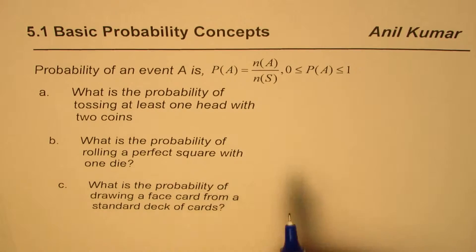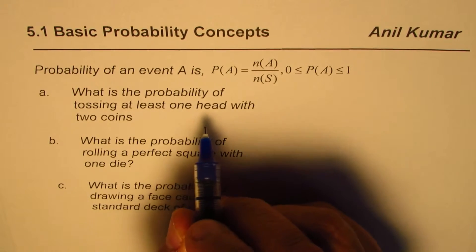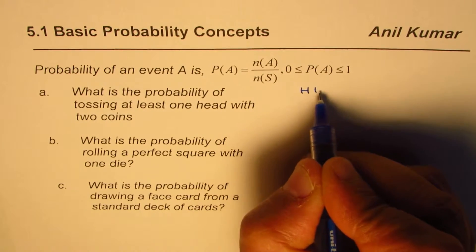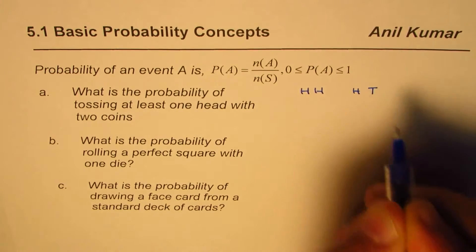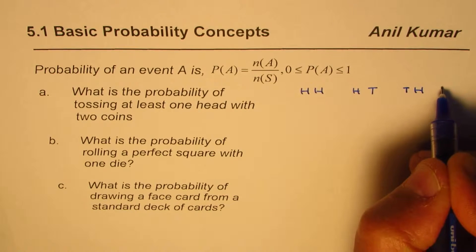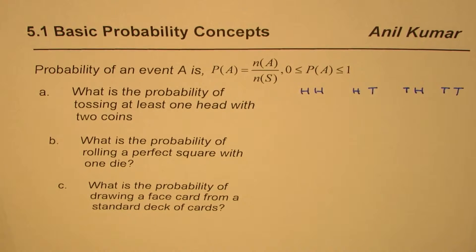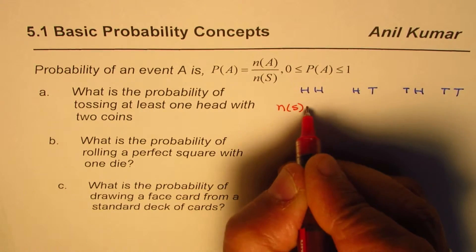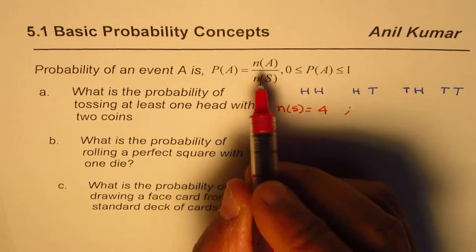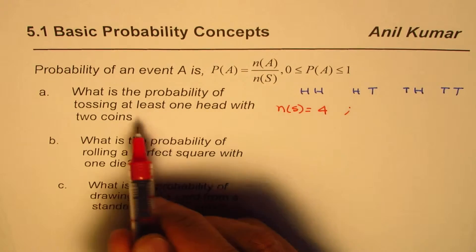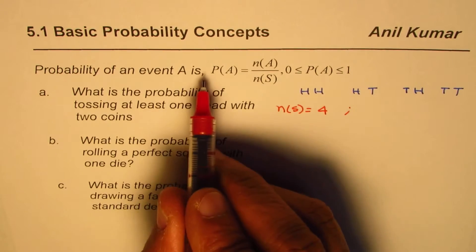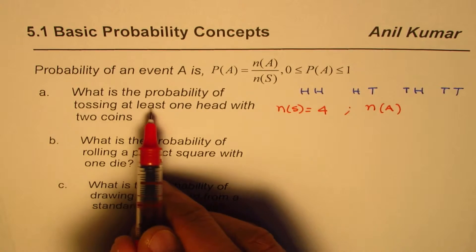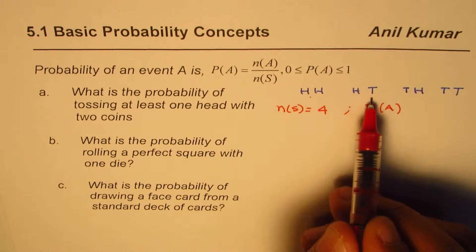Let's answer them one by one. First, what is the probability of tossing at least one head with two coins? To answer this, let's find all possible outcomes. If you toss two coins, you could get both heads, head-tail, tail-head, or tail-tail. So the total number of possible outcomes NS is four. The number of outcomes favorable to our event, NA, are those with at least one head — that's three of them.